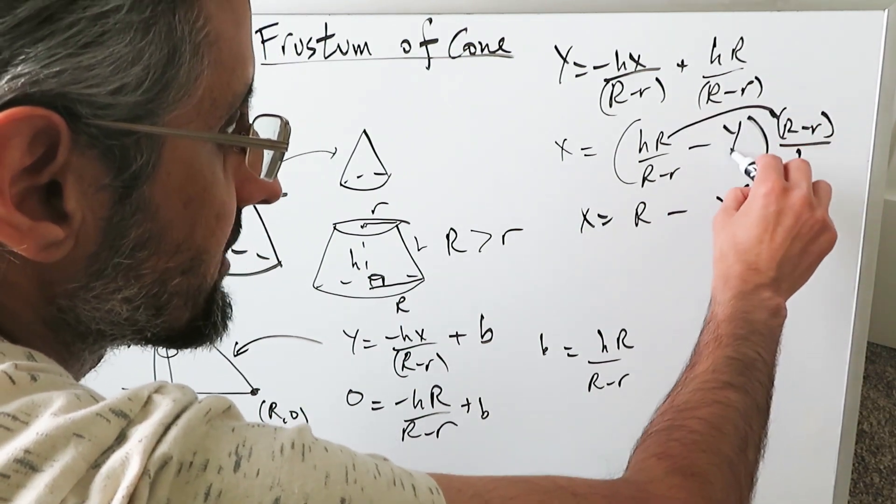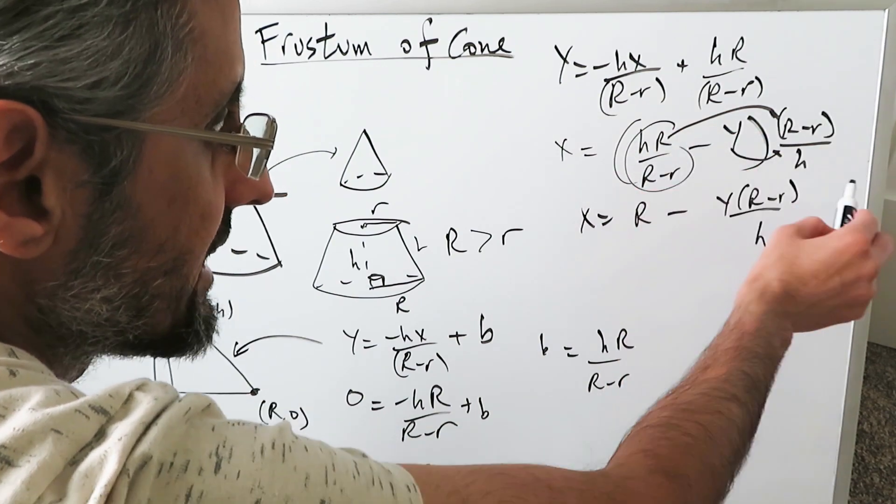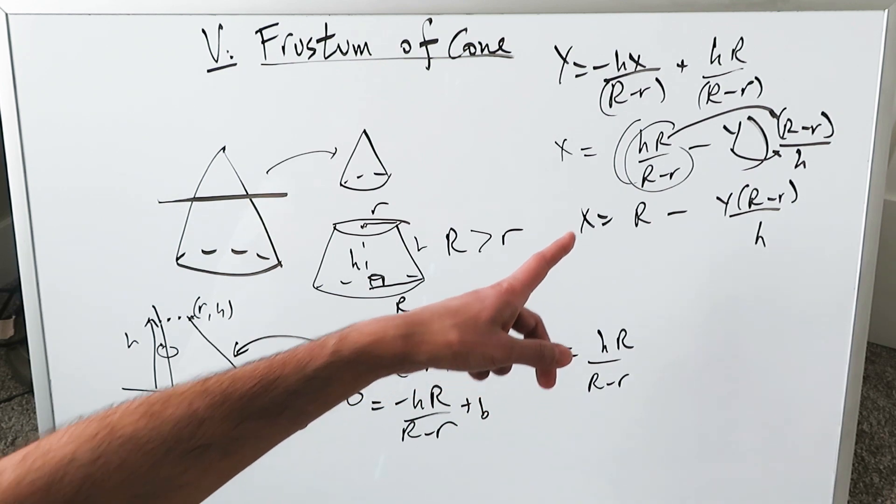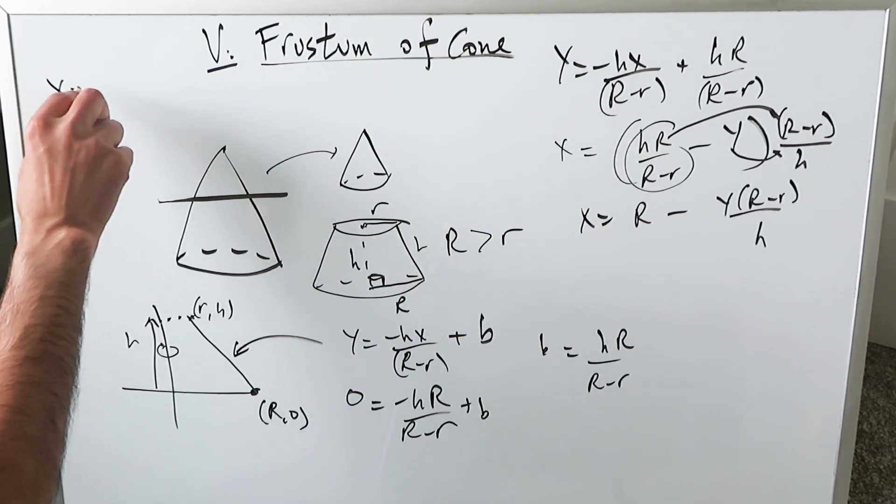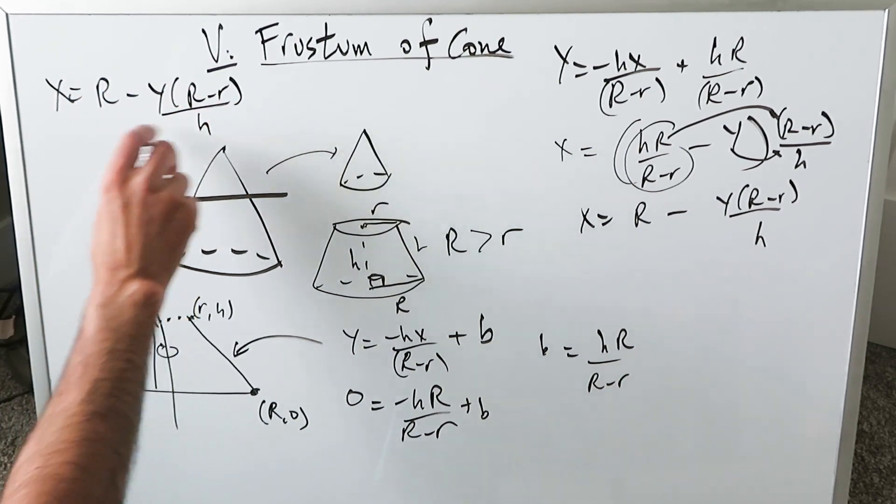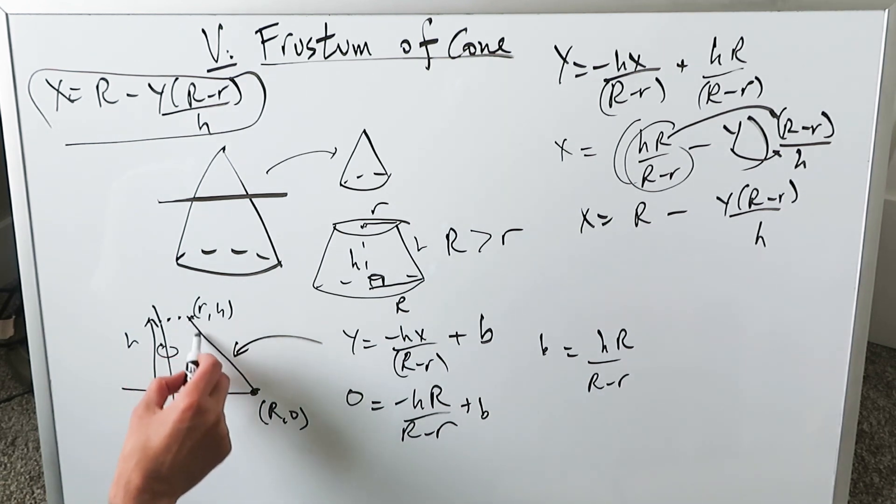This R minus r and that R minus r will cancel. This h and that will cancel. You'll essentially have R minus y R minus r over h. I multiply this with that. I multiply this with this. When I multiply this block with this block the h's cancel out and the R minus r cancels out. The only thing which remains is this capital R. But this equation here is good. x is equal to R minus y R minus r over h. That will be the equation which will come into our play and that's the equation of this segment over here.